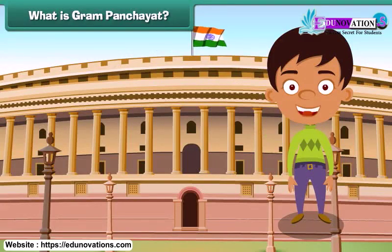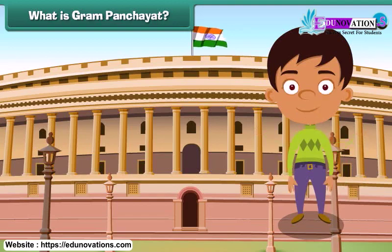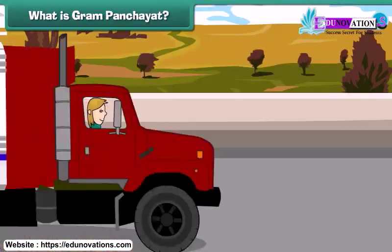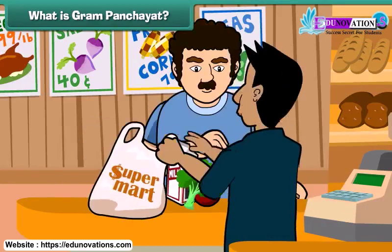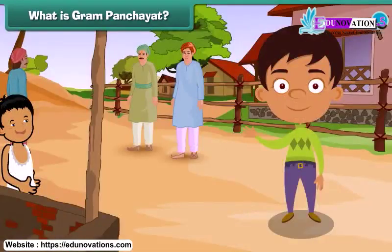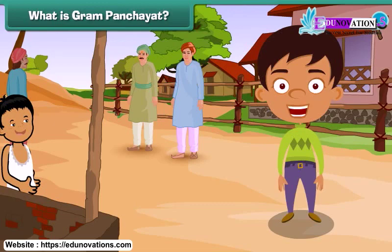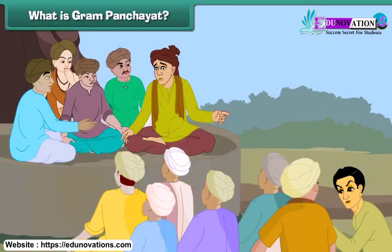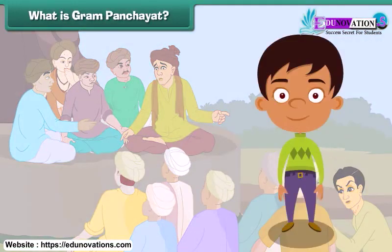We all know that the governments in the states and union territories maintain law and order in their cities and look after the needs of their city dwellers. The question is: who is responsible for keeping law and order in villages and meeting the requirements of villagers? The answer is the village local government, which is known as village panchayat or gram panchayat. The gram panchayat performs both these functions. Let us now understand the structure of gram panchayats in detail.